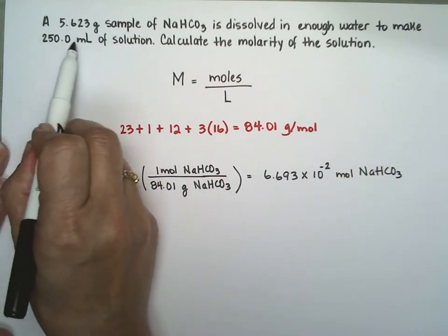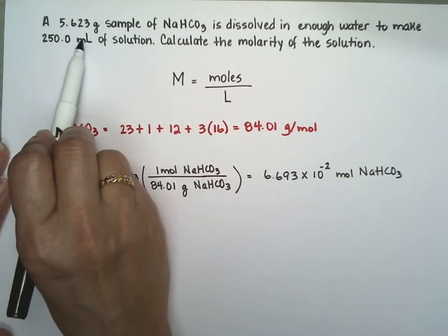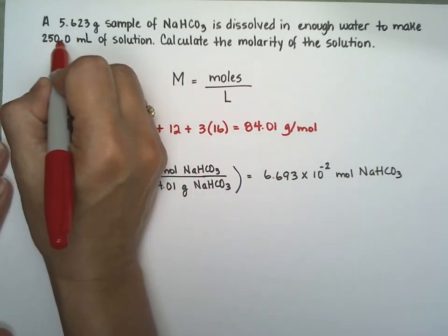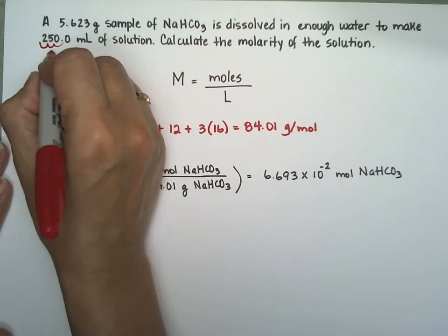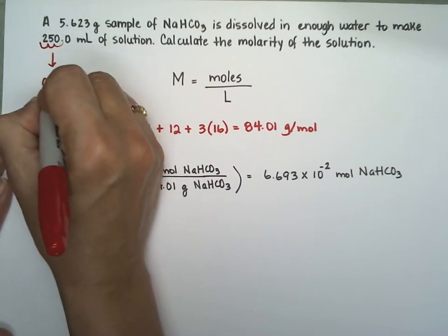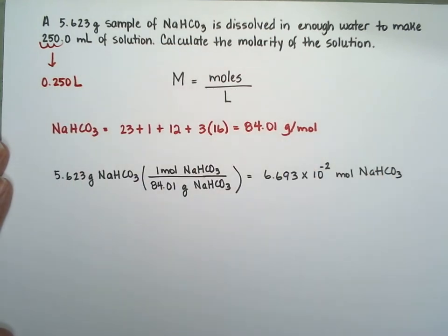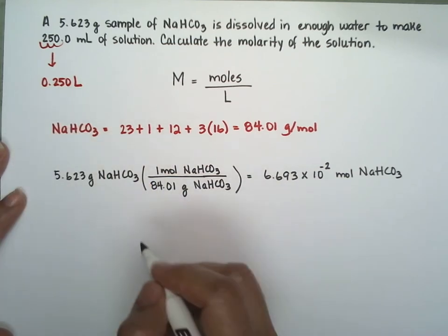Another little thing we're going to do, notice that molarity is in liters. So we need to convert our milliliters into liters. What we do is that we move the decimal point three times to the left. So we have a quarter of a liter, 0.250 liters.